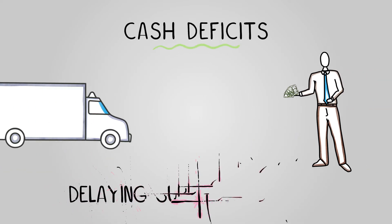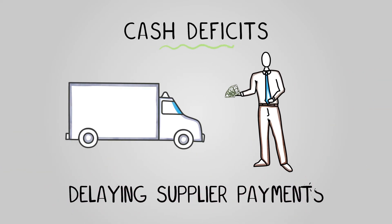A good trick to keep cash around longer is to delay payments for items you have ordered. If a business gets materials and can wait 30 days to pay, they can sell things made from those materials first. This can raise revenue which can be used to pay the suppliers once the short-term cash flow issues are dealt with.